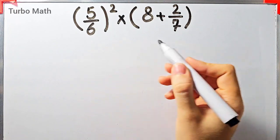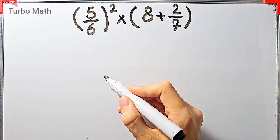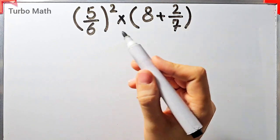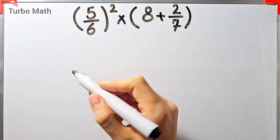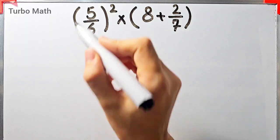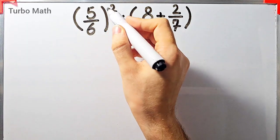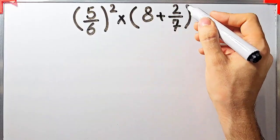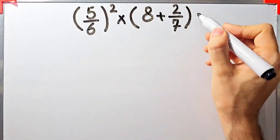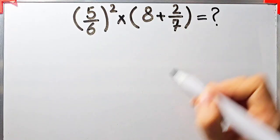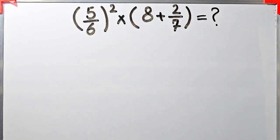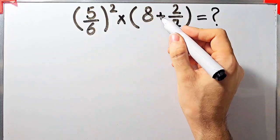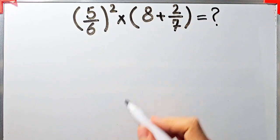Hi friends, welcome to Turbo Math channel. A lot of people get confused when they see this question — they don't know which operation to do first, so they often make a mistake. The question is: five over six, to the power of two, times open parentheses eight plus two over seven close parentheses. In this question we have exponent, multiplication, parentheses, and addition.